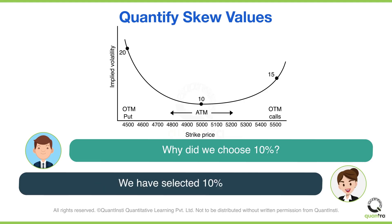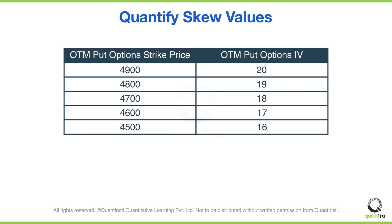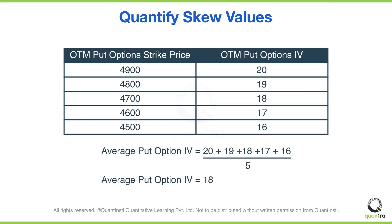A more advanced approach would be to work with multiple out-of-the-money options. You can pick a range of options away from the ATM strike price and calculate their average. Thus, you will choose a set of OTM put options and calculate the average of their IV values. This set could be 5 options in the 5% to 12% range from at-the-money options. For example, we have taken 5 OTM put options as shown on the screen.